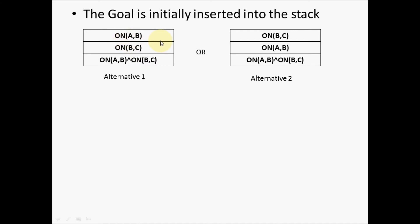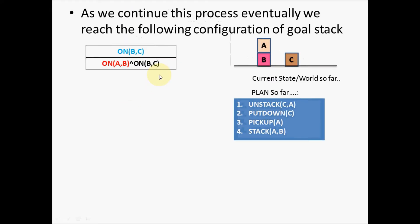In Alternative 2, we insert on(A,B) first and then on(B,C). Both alternatives are correct; you can choose any one. For this example, let us assume we have considered Alternative 1. As we continue this process, eventually we reach the following configuration of the goal stack. I have skipped the intermediate steps of goal stack planning until I reach this stage.